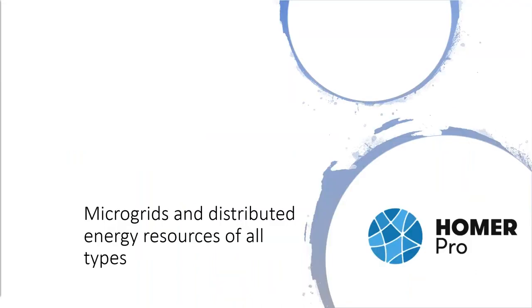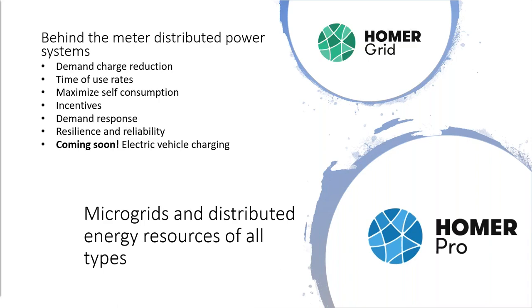There are two versions of HOMER. HOMER Pro is the original flagship product with broad applications for microgrids in many markets. HOMER Grid was designed explicitly for behind-the-meter systems in grid-connected markets where demand charge reduction, time-of-use rates, maximizing self-consumption, incentives, resiliency, or some combination of these are what matters most. Both products are actively being developed, and a new version of HOMER Grid to address electric vehicle charging is days away from release.